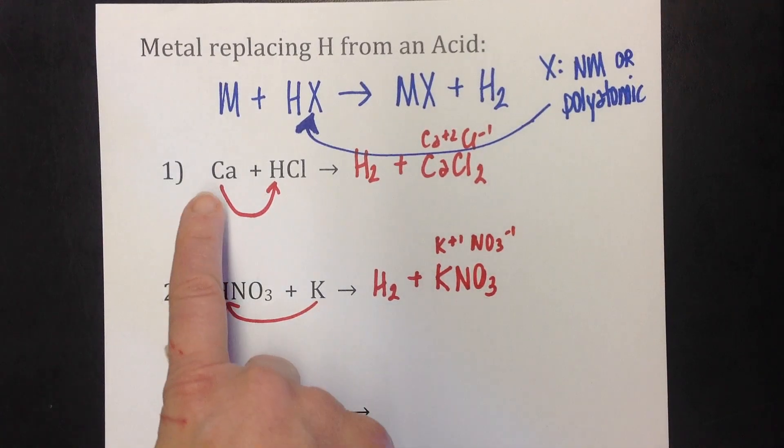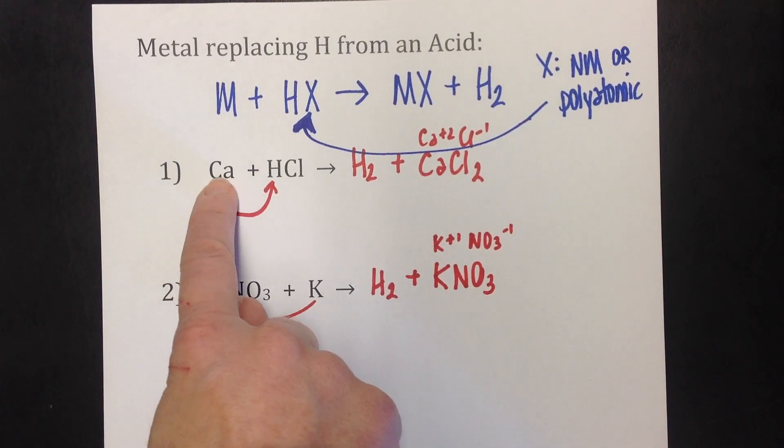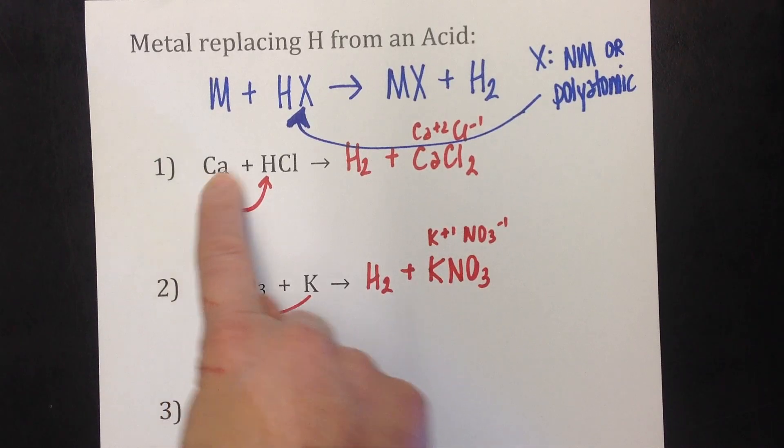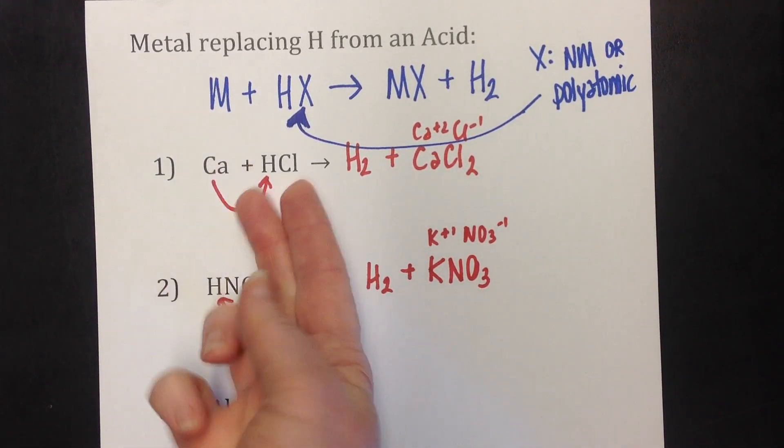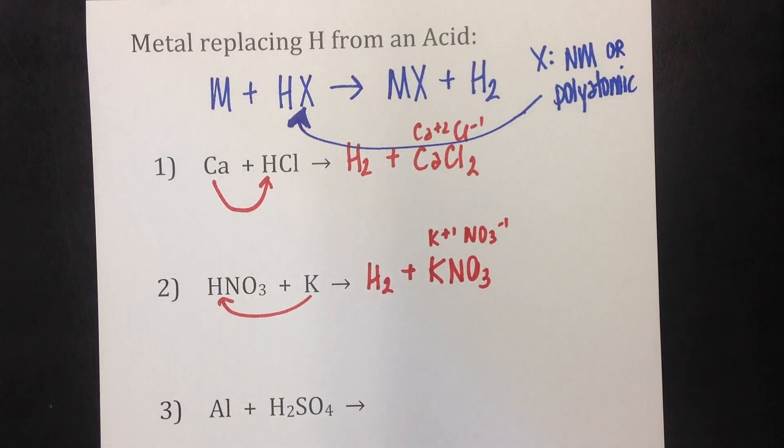And notice in this one, the single element, the one I call the third wheel, it was written first. And number two, it was written second. It doesn't matter the order that you write these in. You just got to be able to recognize, hey, I've got a pair or an ionic compound and then I've got something all by itself.